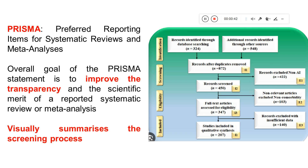PRISMA was initiated in 2009, but later it was developed further and made more suitable — a template was created, and that happened in 2020. Now there is also software which can be used for creation of this PRISMA model for your systematic review papers. PRISMA stands for Preferred Reporting Items for Systematic Reviews and Meta-Analysis, and it helps provide transparency for scientific merit.